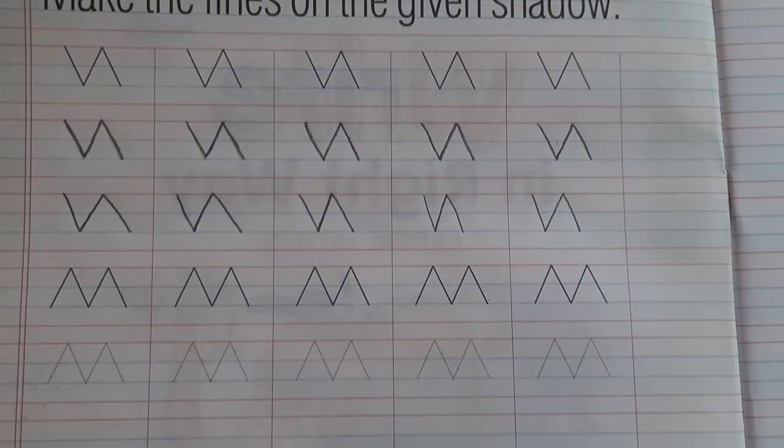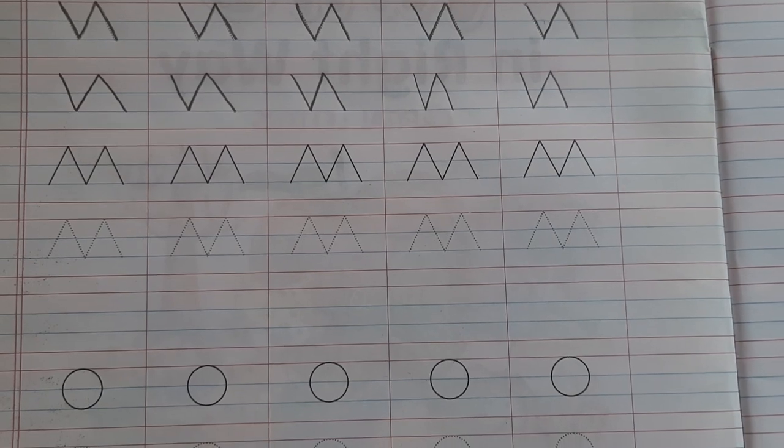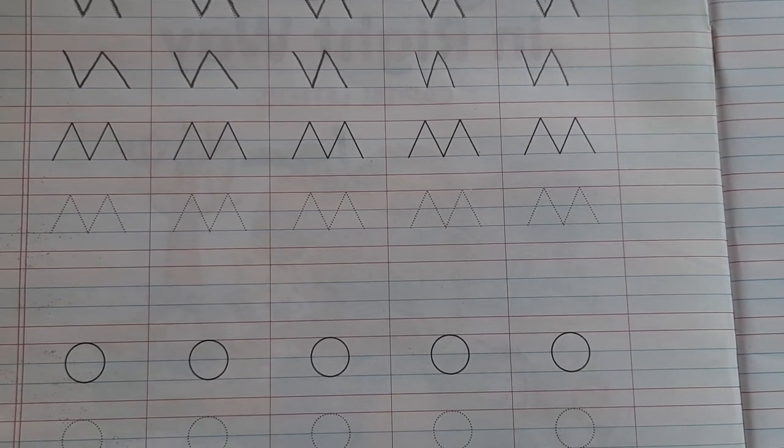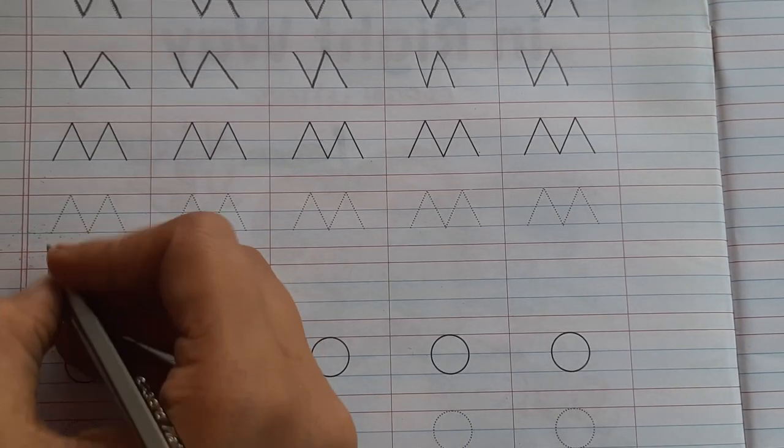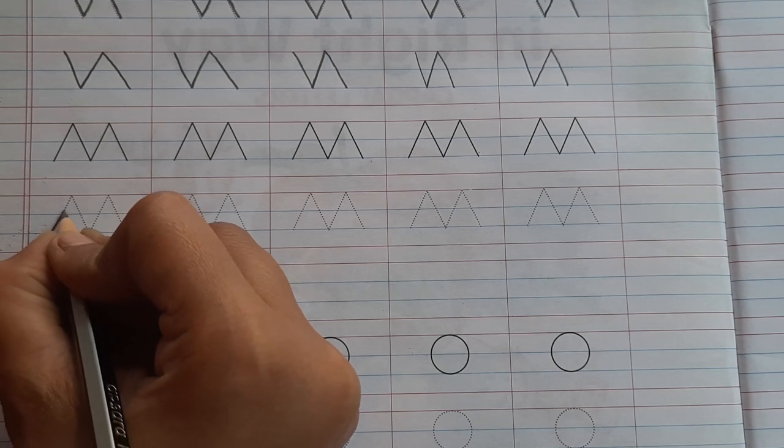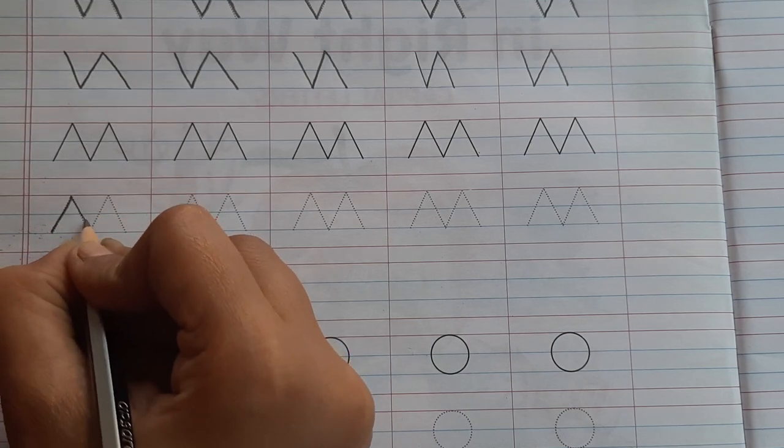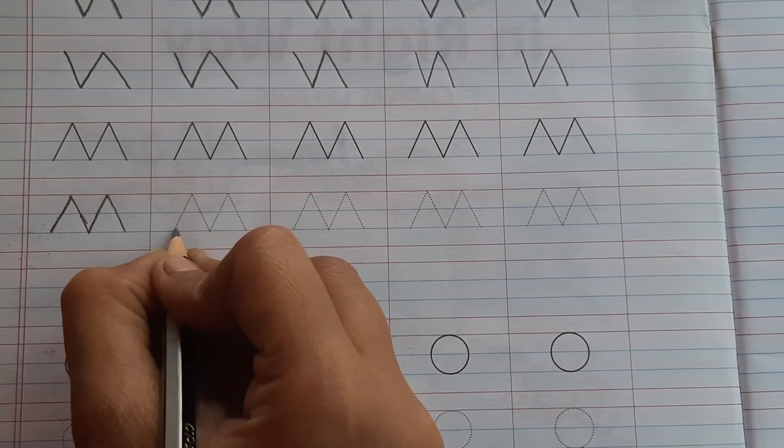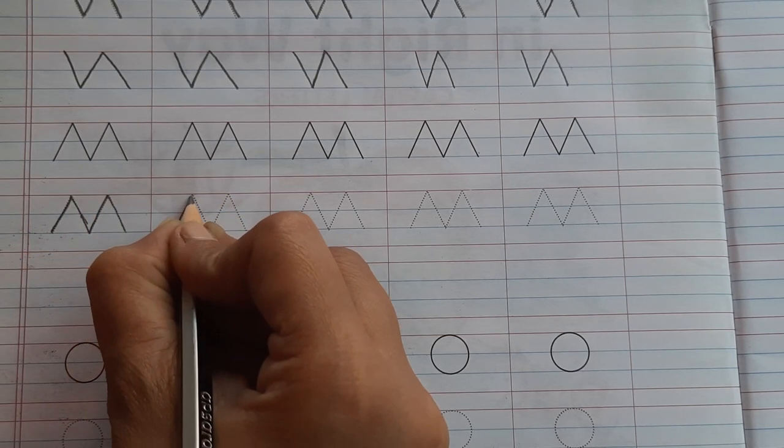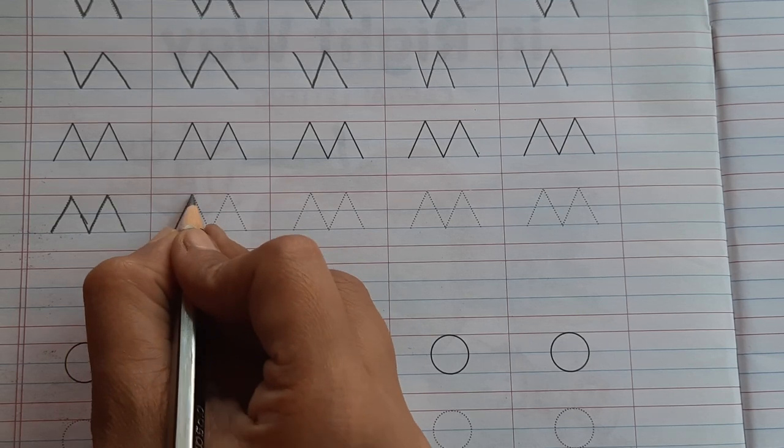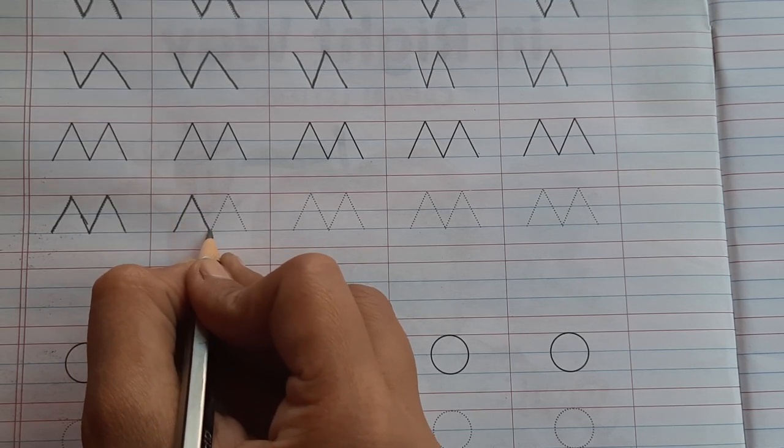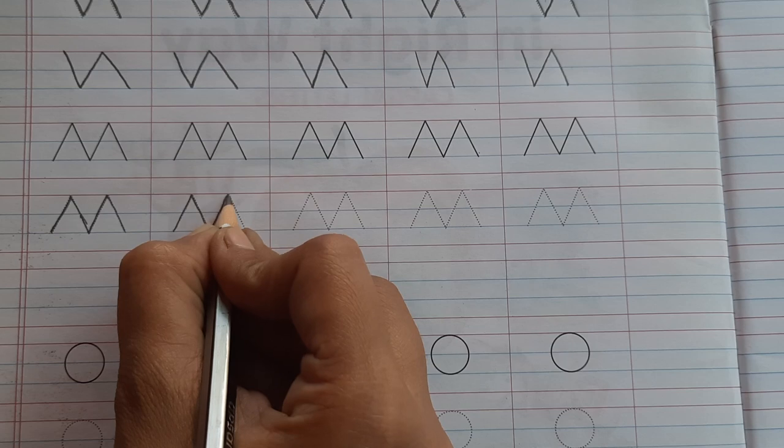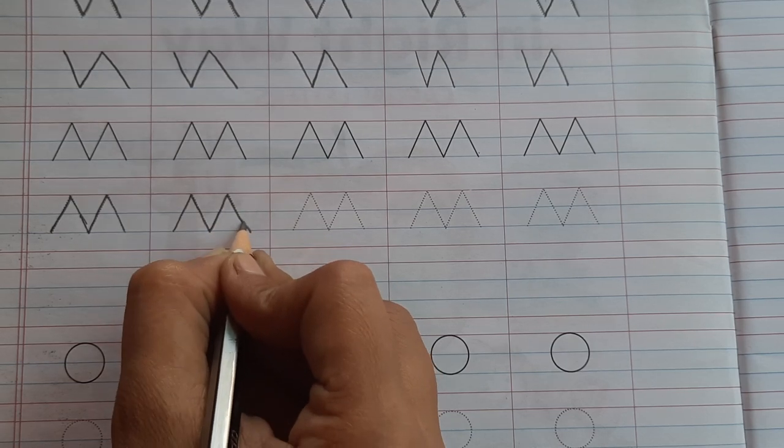Next line, we do this work with the help of dots. Starting with the downwards, go to upward, then again downwards, then upward, and at the last downward.